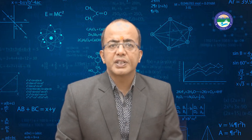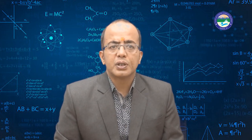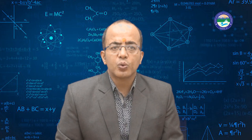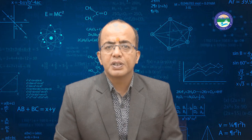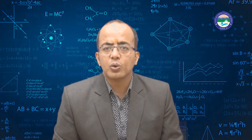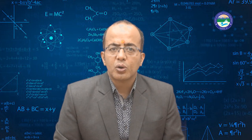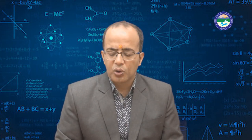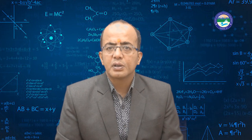A norm for matrices induced by the L2 norm means: ‖A‖₂ = maximum eigenvalue of (Aᵀ A), equivalently ‖A‖ = max over x≠0 of ‖Ax‖ / ‖x‖.